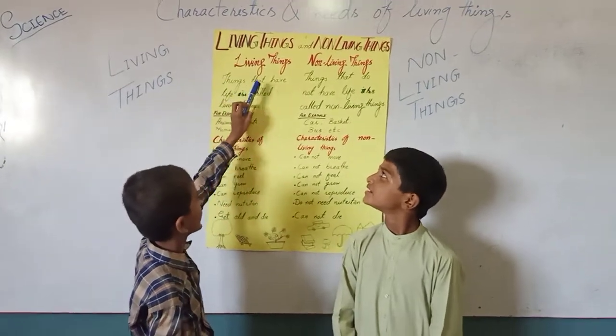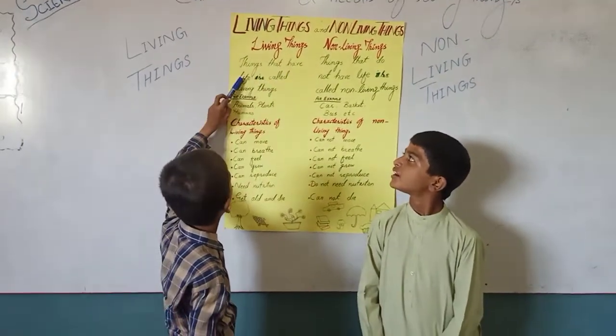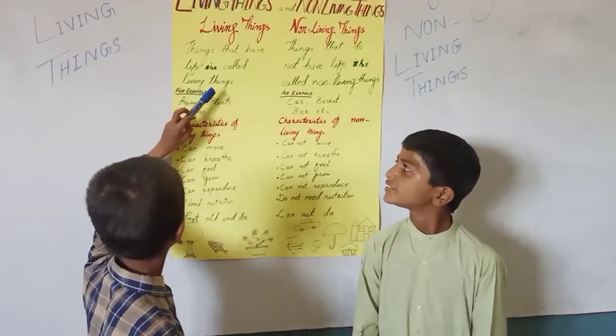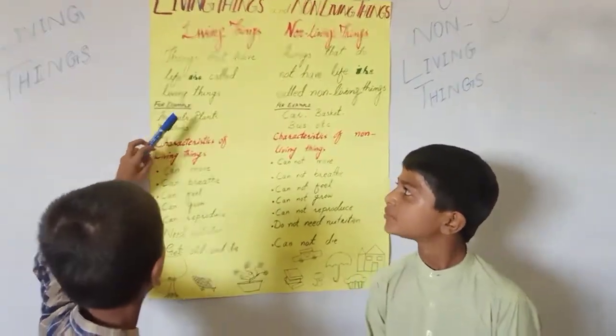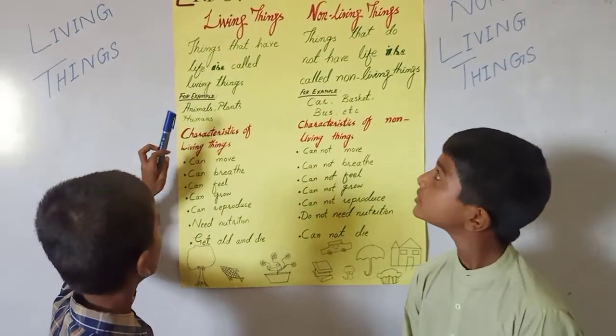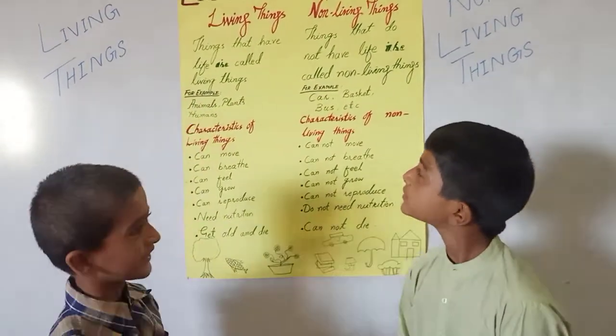Things that have a life are called Living Things. For example: animals, plants, and humans.